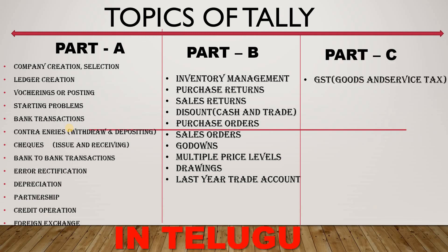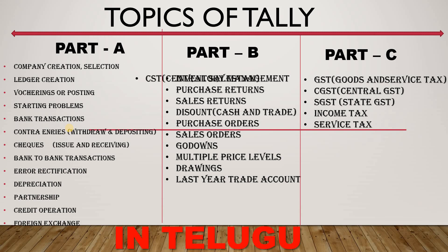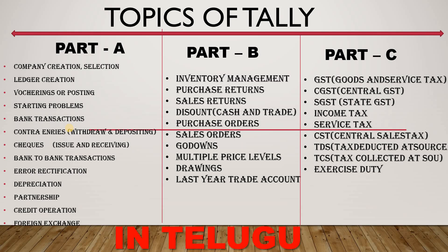The last topic covers taxes. GST — Goods and Service Tax. CGST — Central GST. SGST — State Goods and Service Tax. Income Tax. Parts A and B are the most important parts, and Part C is also very important. You may make a mistake in Part B, but with inventory in Part C, taxes will be covered completely.